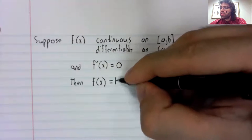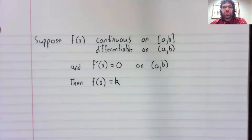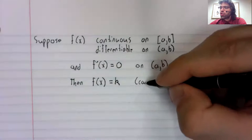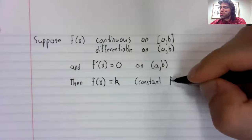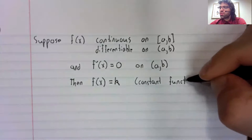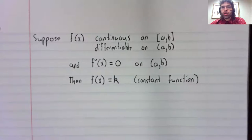In particular, we can say that the original function is a constant function. And let's give a little proof of this.